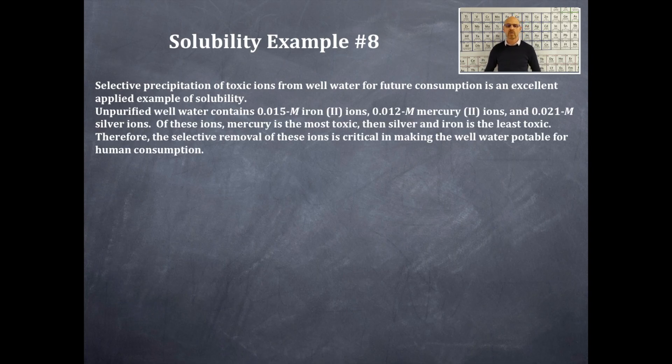Unpurified well water that I made up here contains 0.015 molar ferrous, that is, iron 2+ ions, 0.012 molar mercury 2+ ions, and 0.021 molar silver ions. Of these ions, mercury is the most toxic for humans, silver is the next, and iron ion is the least toxic.